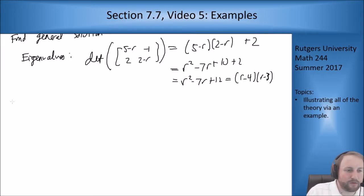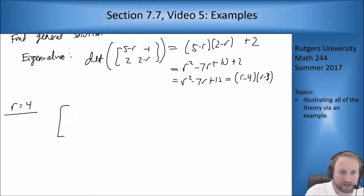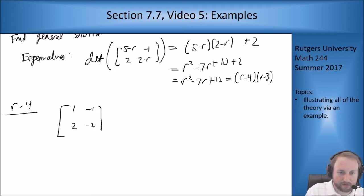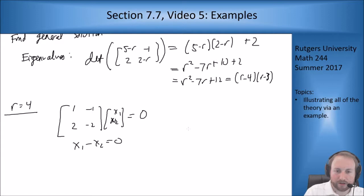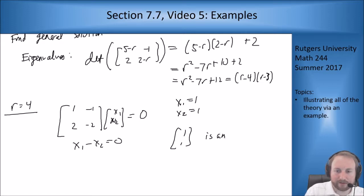Looking at r equals 4, I plug in to get the system [[1, -1], [2, -2]] times [x1, x2] equals 0. I only have the one equation x1 minus x2 equals 0, so x1 equals 1, x2 equals 1, and [1, 1] is an eigenvector with eigenvalue 4.